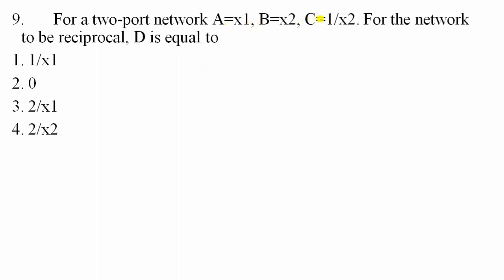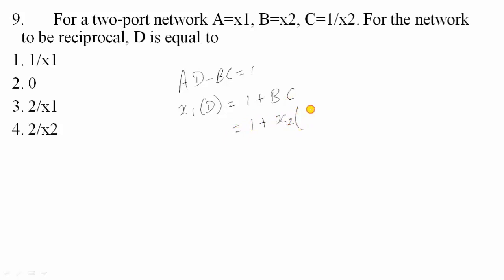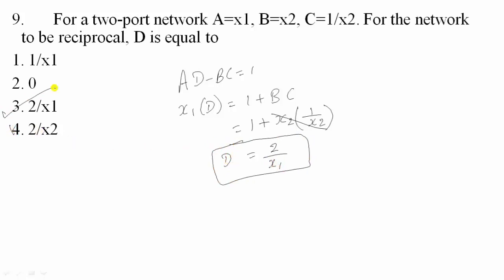Question 9: For a two-port network, A = x1, B = x2, C = 1/x2. For the network to be reciprocal, AD − BC = 1. So x1·D − x2·(1/x2) = 1, giving x1·D = 2, therefore D = 2/x1. Option 3 is correct.